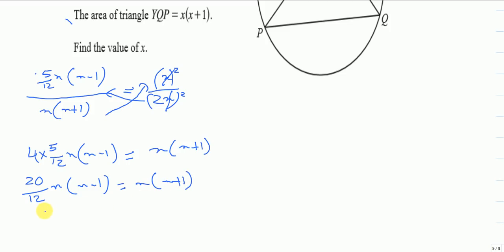Further, if I divide x on both sides, this x will cancel with this x. So what I have after that is - I will take this 12 on the right hand side. I don't like the denominators in my equation.